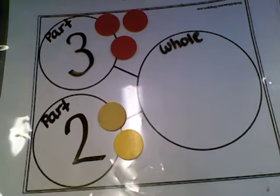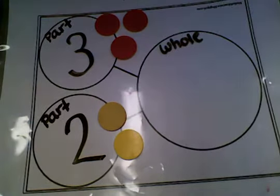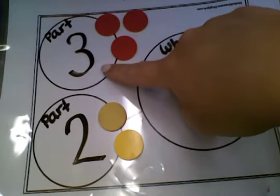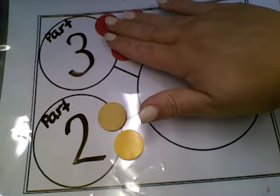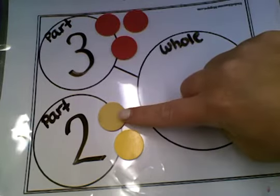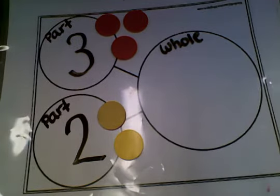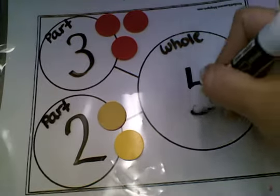When I want to count altogether, instead of recounting each chip, I can use counting up. I already know there are three here. Three. Now I can count up. Three, four, five. There should be five chips altogether.